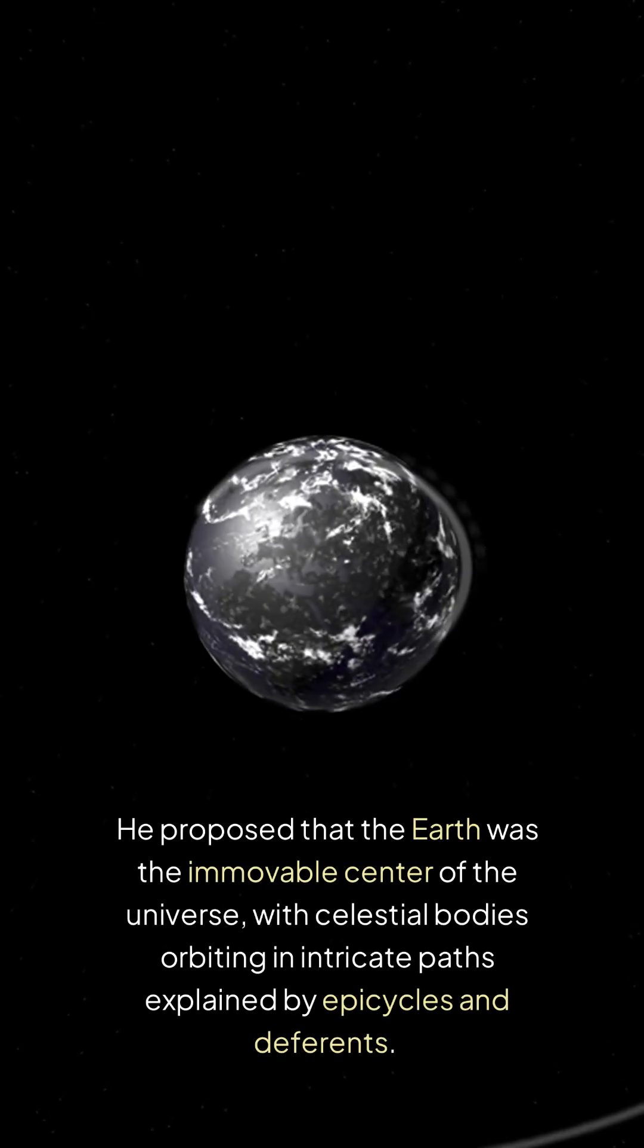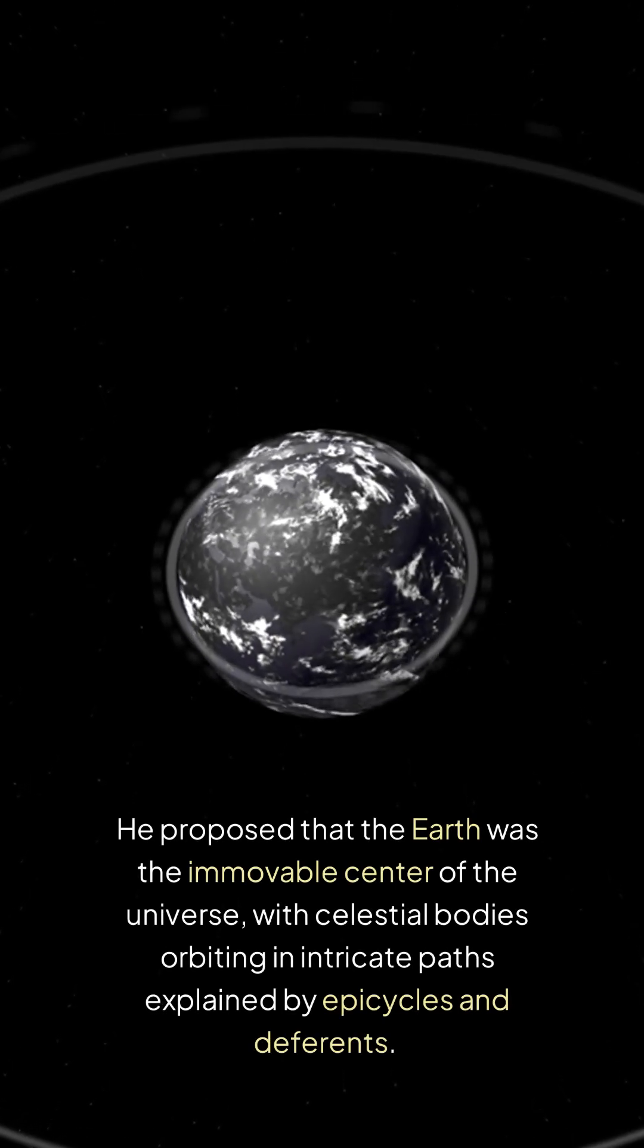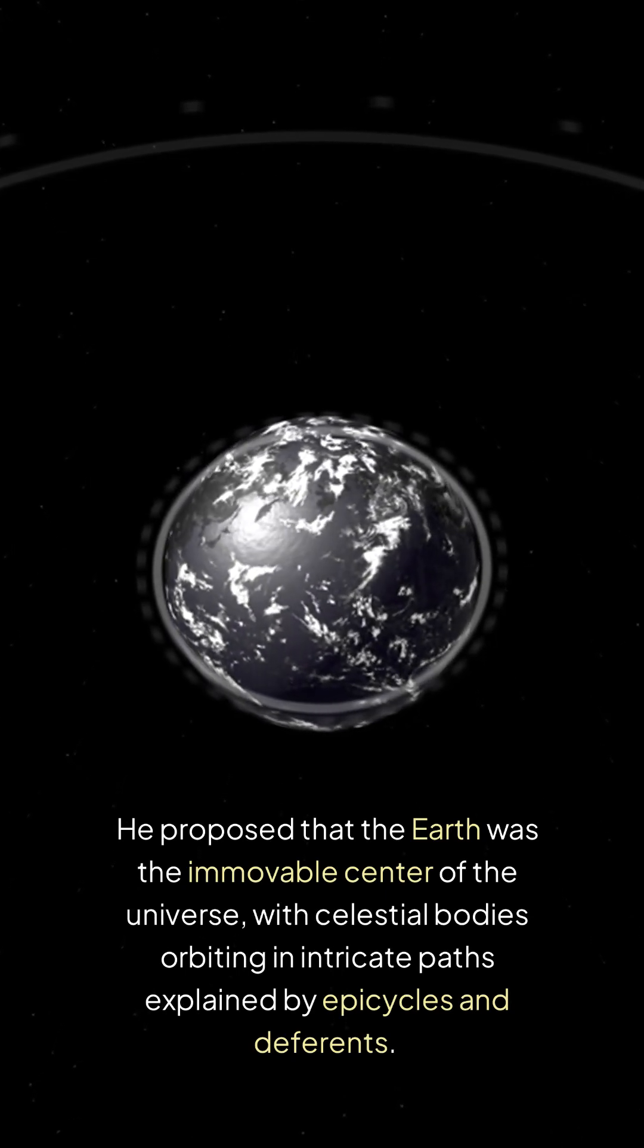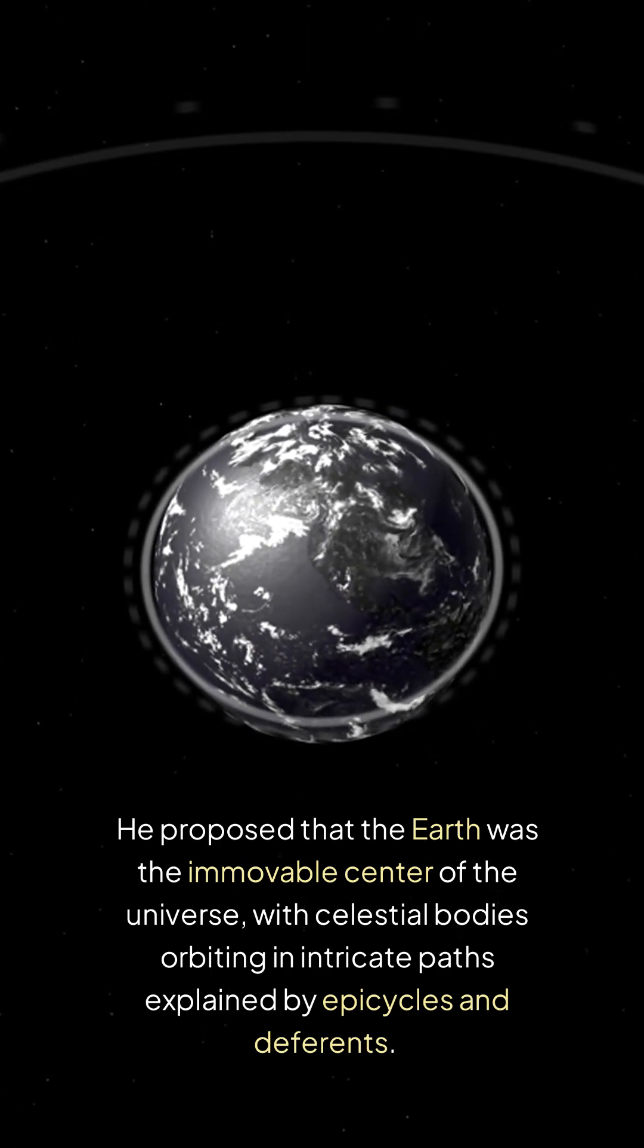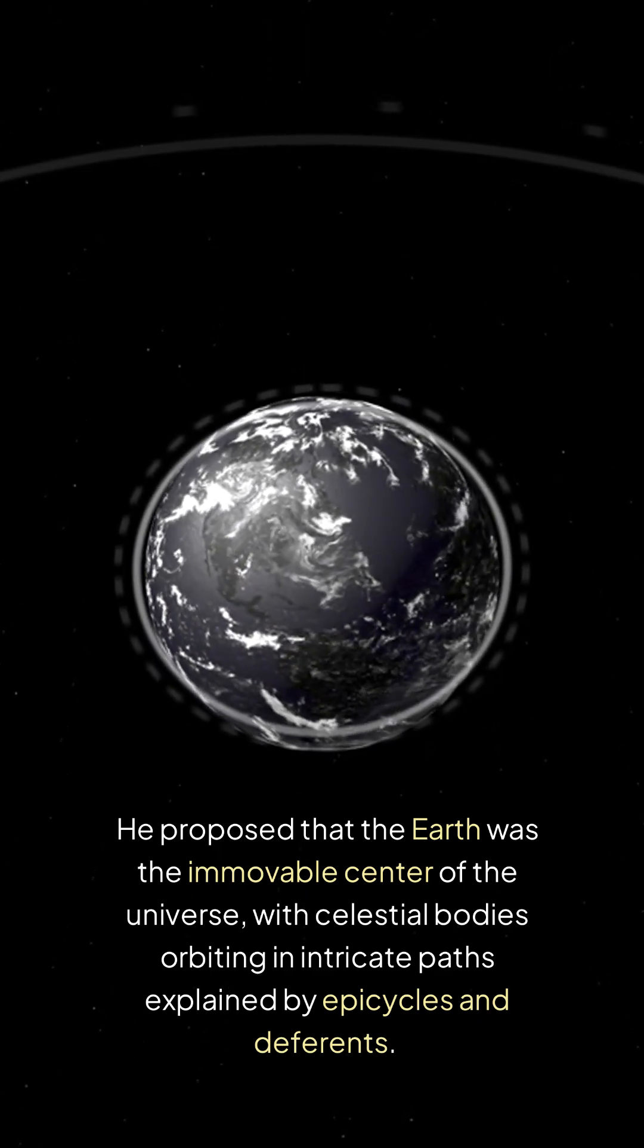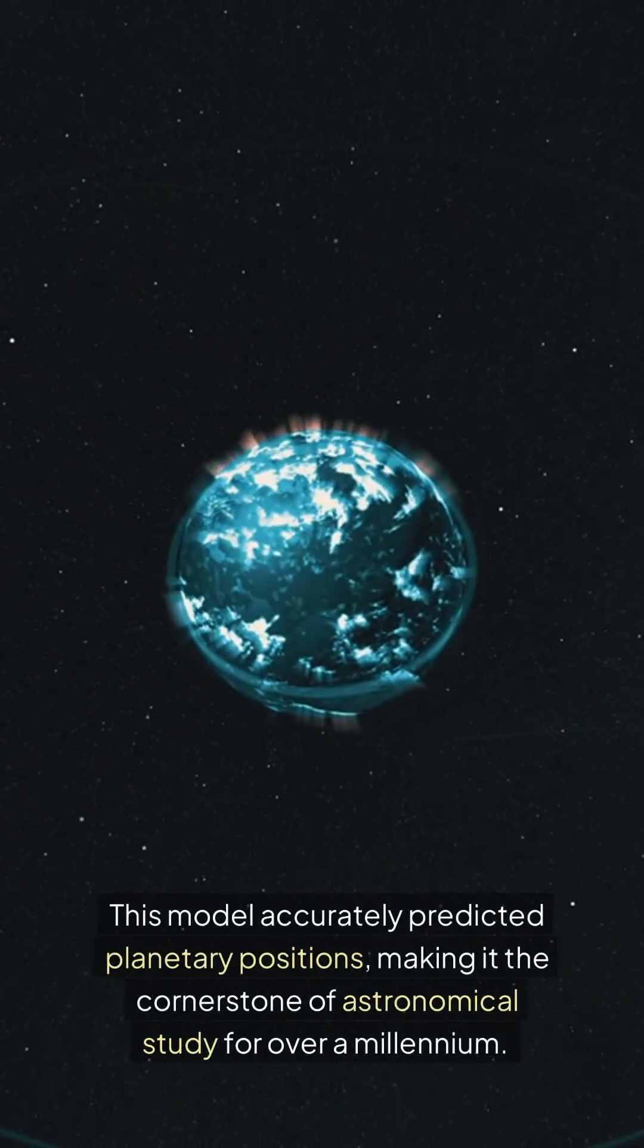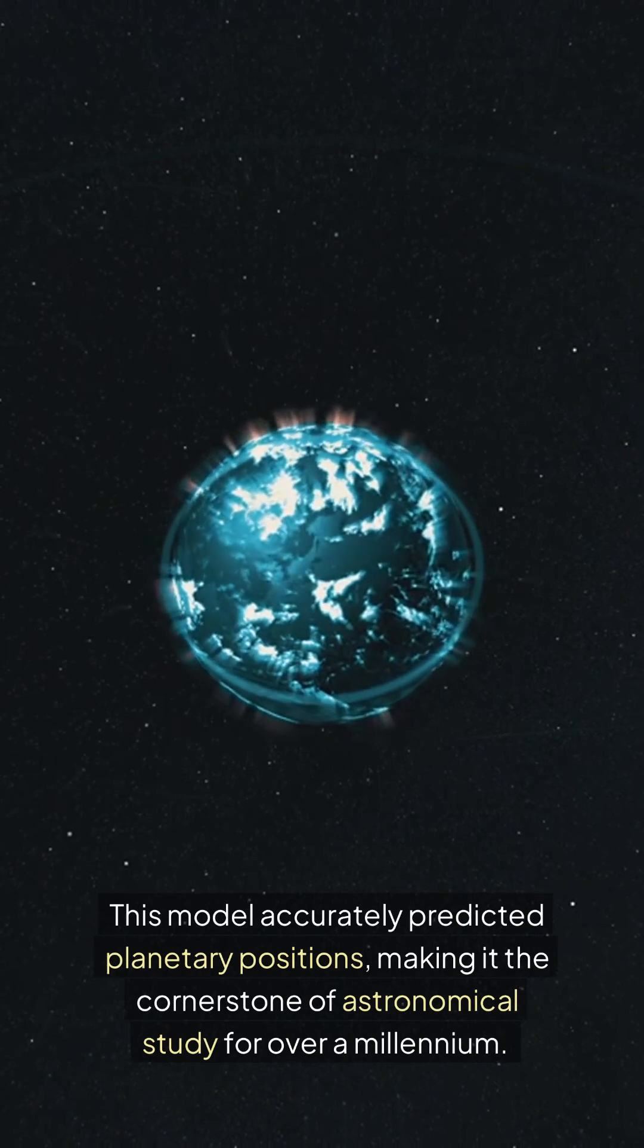He proposed that the Earth was the immovable center of the universe, with celestial bodies orbiting in intricate paths explained by epicycles and deferents. This model accurately predicted planetary positions, making it the cornerstone of astronomical study for over a millennium.